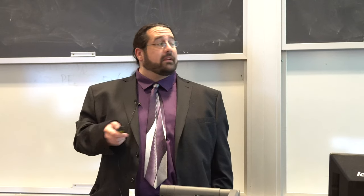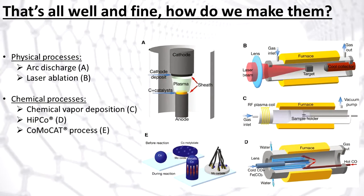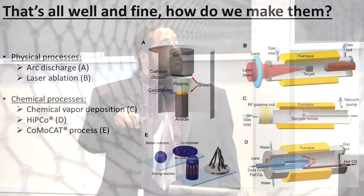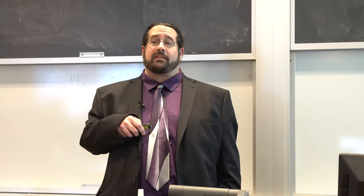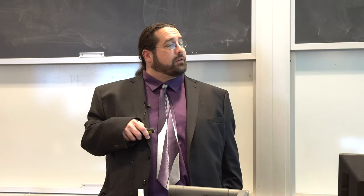There are five separate ways to make carbon nanotubes: the arc discharge method — the one Kroto designed and Iijima later modified — laser ablation, chemical vapor deposition, the high-pressure carbon monoxide process, and the CoMoCAT process, which is what my carbon nanotubes were made by. CoMoCAT uses a cobalt-molybdenum catalyst in a fluid bed to vaporize a hydrocarbon gas, which then grows carbon nanotubes on the catalyst.